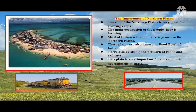Let's discuss the importance of the Northern Plains. The soil of the Northern Plains is very good for growing crops, so the main occupation of the people here is farming. Most of the Indian wheat and rice is grown in the Northern Plains, and this is the reason these plains are also called the food basket of India. Since the Northern Plains are flat and level land, there exists a good network of roads and railways. The Northern Plains are very important for the economic development of our country.